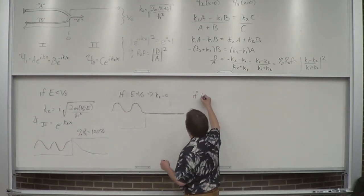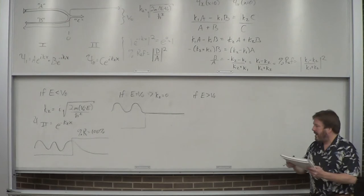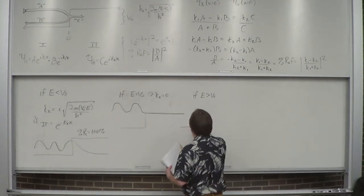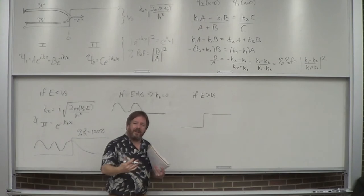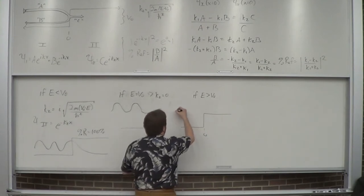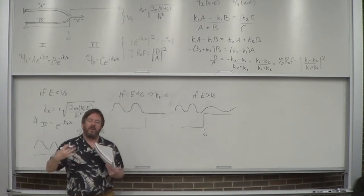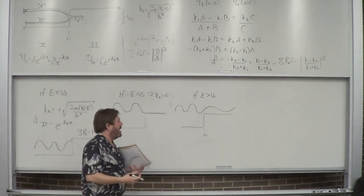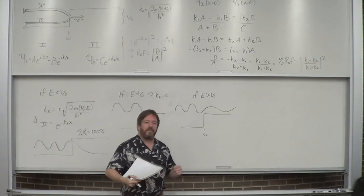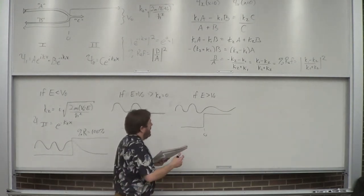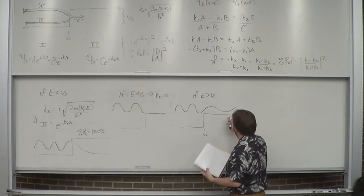Now let's do the case where E is greater than V_0. This is where it gets more interesting. What you're going to have is the familiar picture you've seen me do many times: a wavy wave that becomes less wavy because there's potential energy. The same idea as the particle in the finite box from the unbound case. I hope this is familiar. But there is a catch.